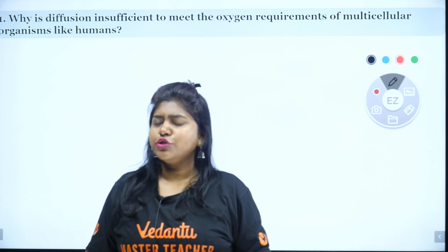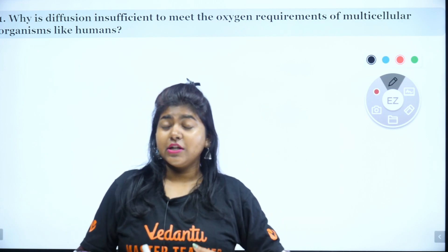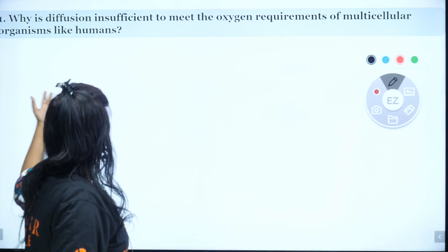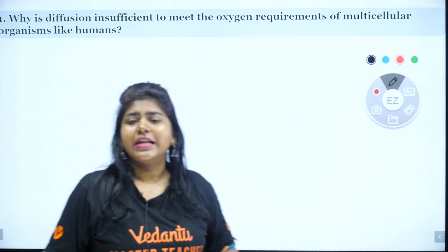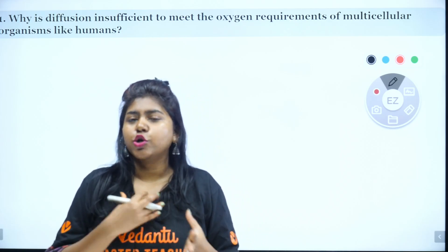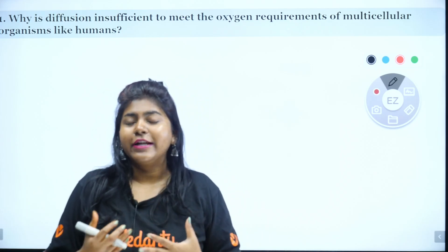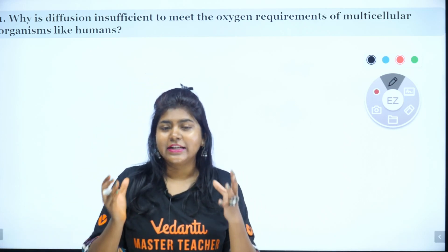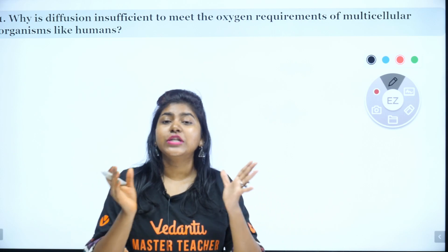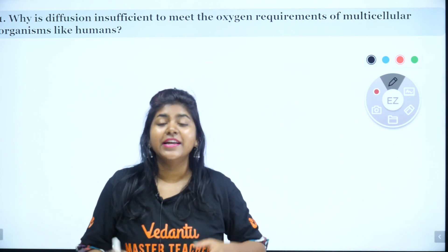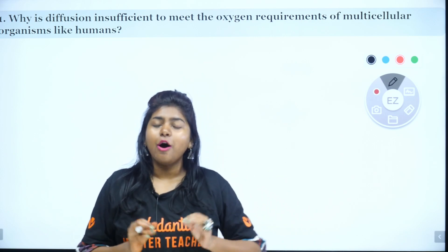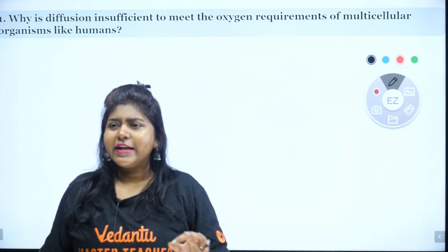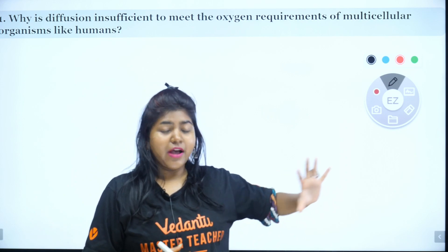So what are the major problems? In this question, it's simply the diffusion. Even the oxygen requirements cannot be met by diffusion alone. In our body, we have tissues, and tissues form organs, and organs form an organ system.